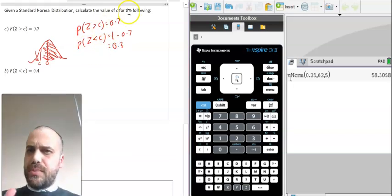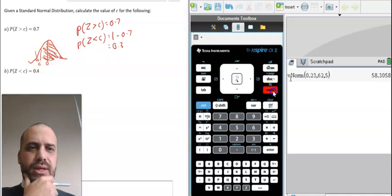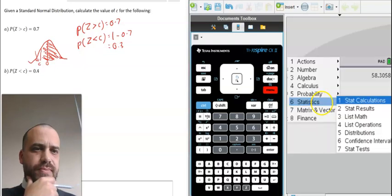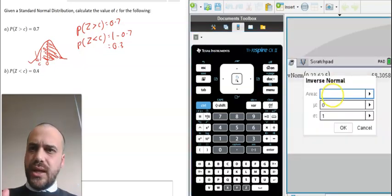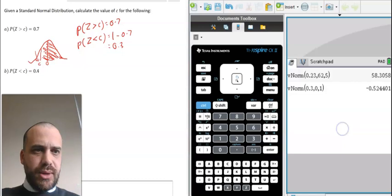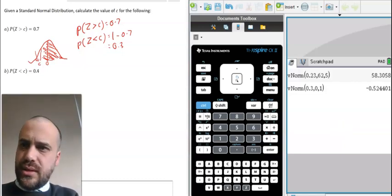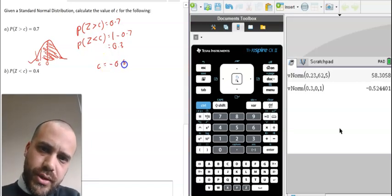So now that I've drawn my picture and figured out that I need to calculate on the other side of it, I can just put it into statistics, distributions, inverse normal. And now I want an area of 0.3, mean of 0, standard deviation of 1, and my answer is C equals negative 0.5244.